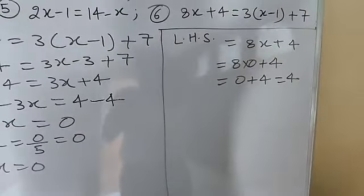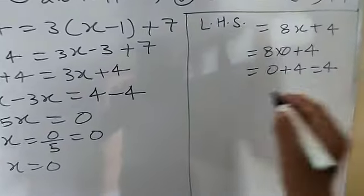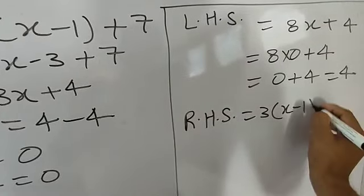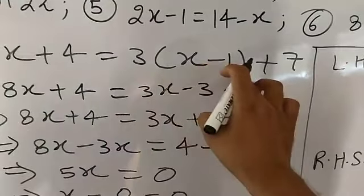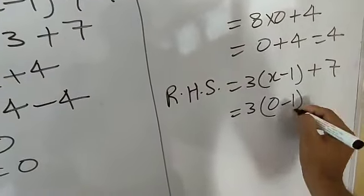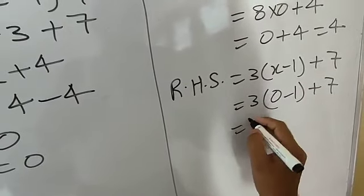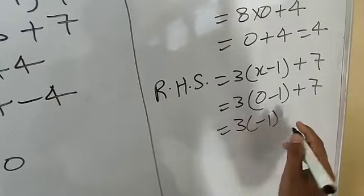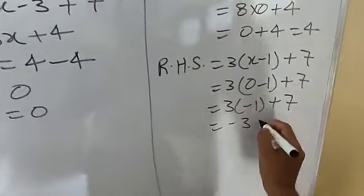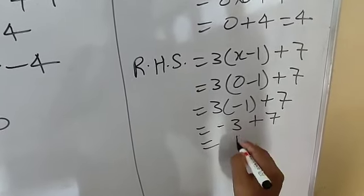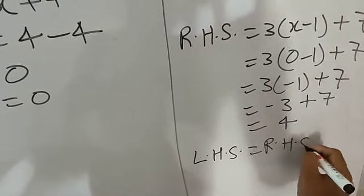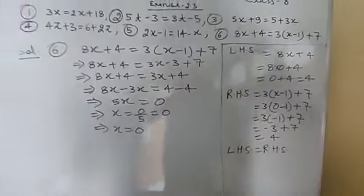Now I am going to find the right hand side. RHS equals 3 into (x minus 1) plus 7. Putting x equal to 0: 3 into (0 minus 1) plus 7. That is 3 into minus 1 plus 7, which is minus 3 plus 7 equal to 4. So LHS equals RHS, both are 4. Your solution is correct. That is the solution of question number 6.